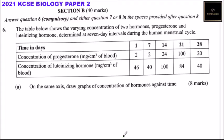Section B consists of 40 marks. You are required to answer question number six and either question seven or eight in the spaces provided after question eight. The table shows the varying concentration of two hormones — progesterone and luteinizing hormone — determined at seven-day intervals during the human menstrual cycle. These are hormones produced during the menstrual cycle of a female.